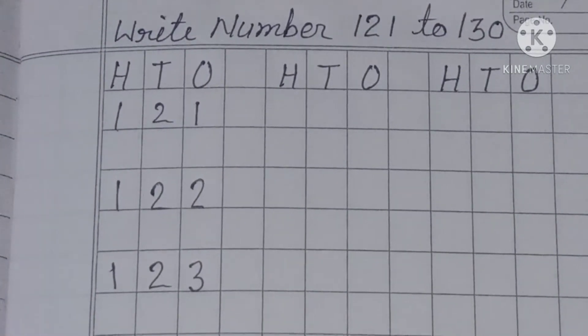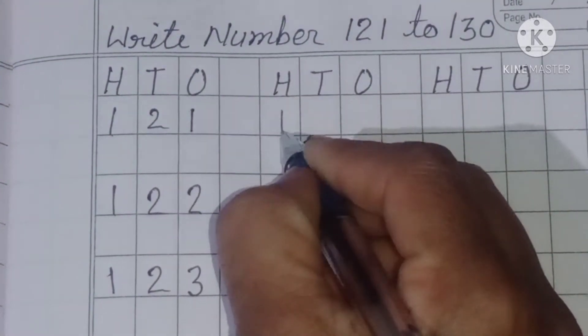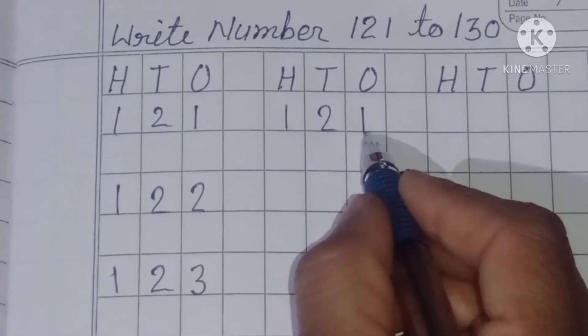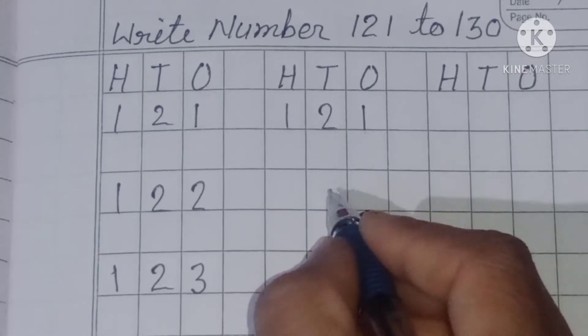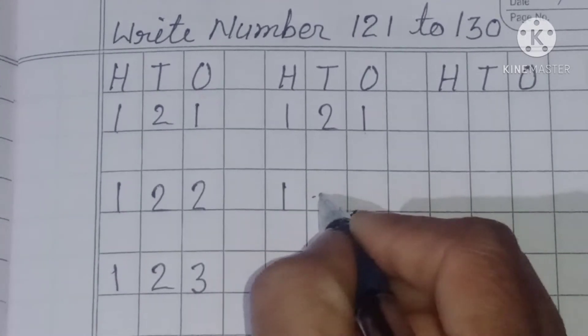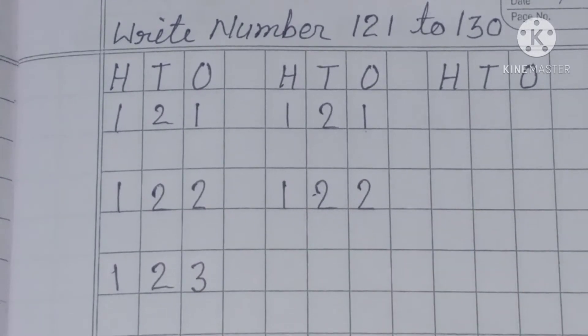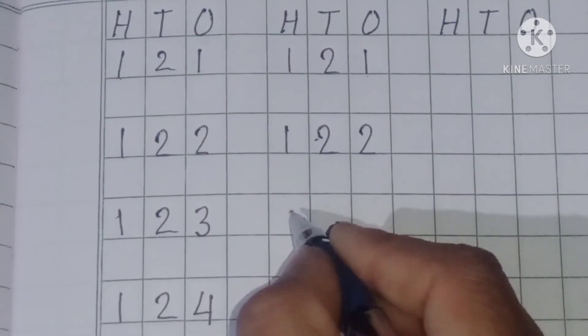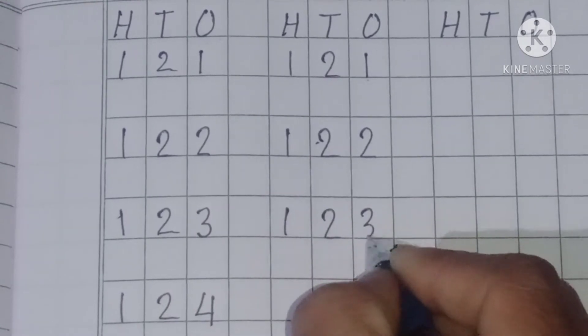Write numbers 121. So let's start: 1, 2, 1: 121. After that number 122: 1, 2, 2. What comes after 22? 23. 1, 2, 3: 123.